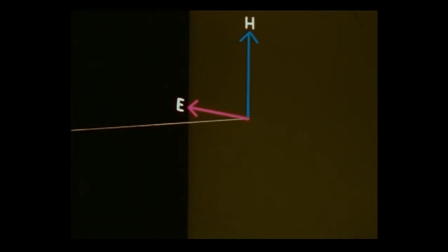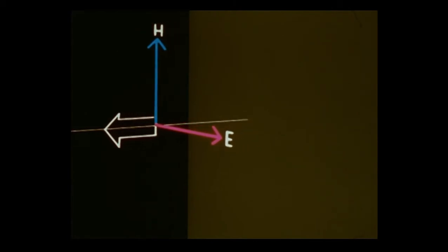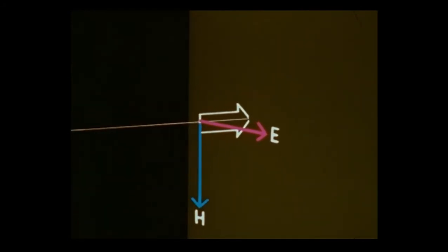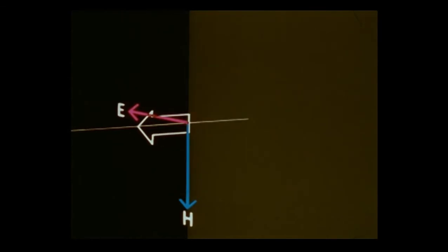By Poynting's rule, the direction vector is therefore reversed. The same process occurs for each successive pair of vectors. The direction of propagation thus reverses when the wave strikes a plane surface.